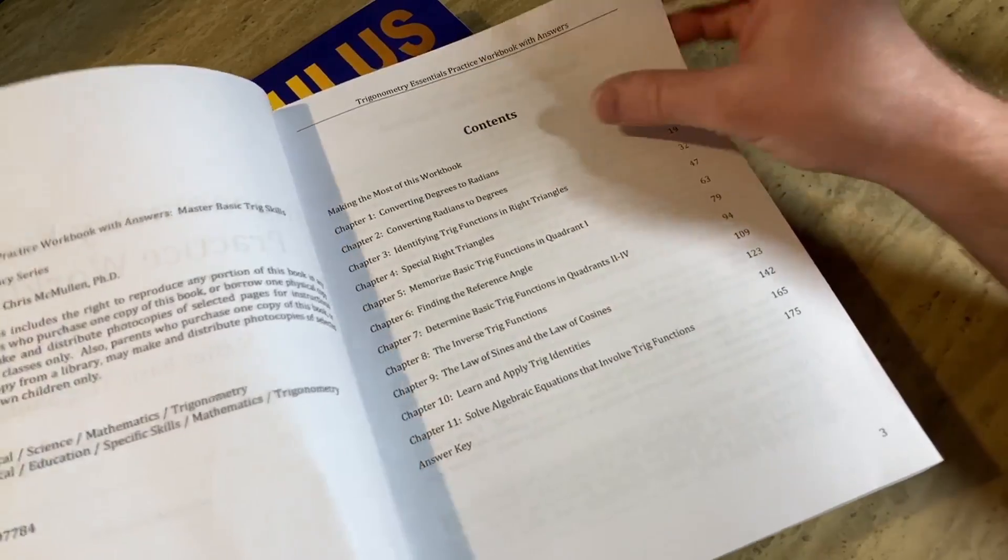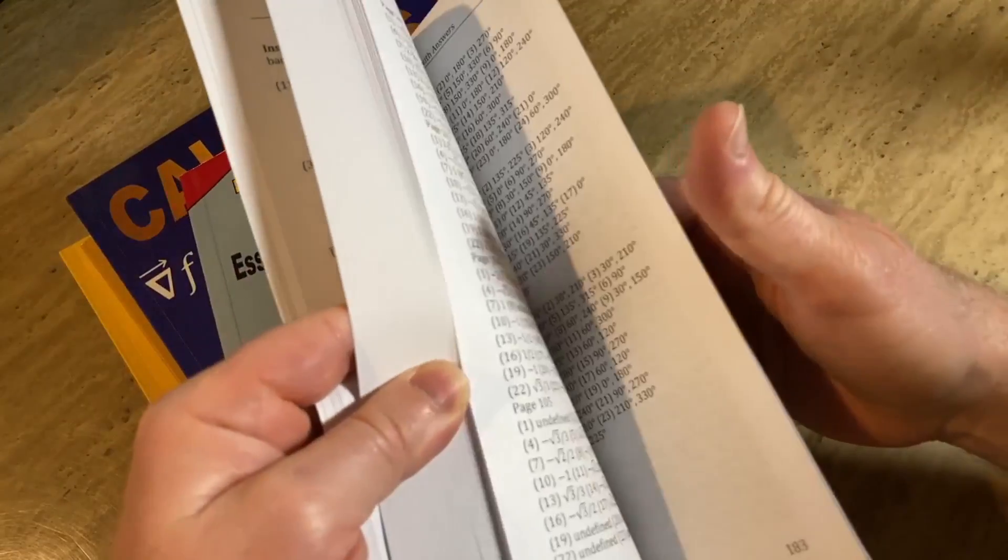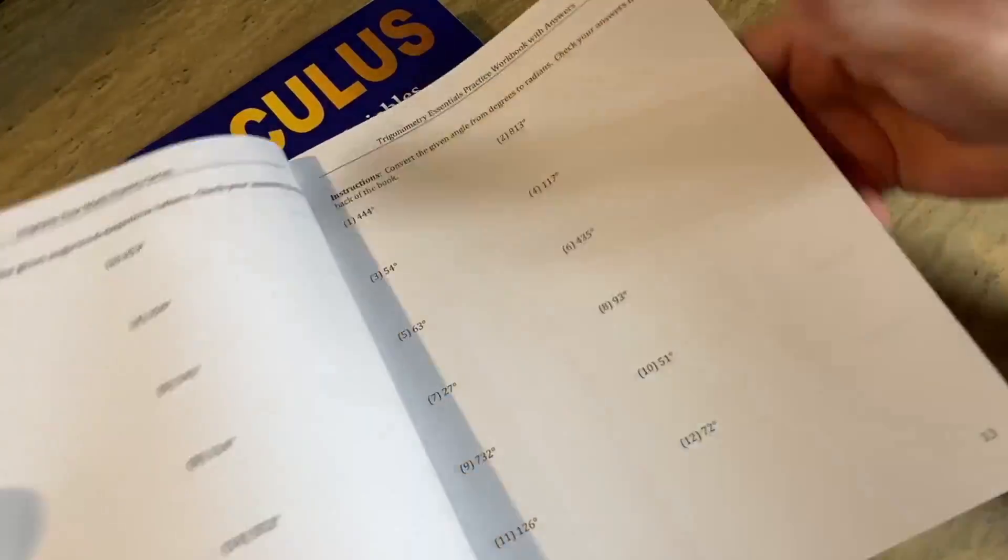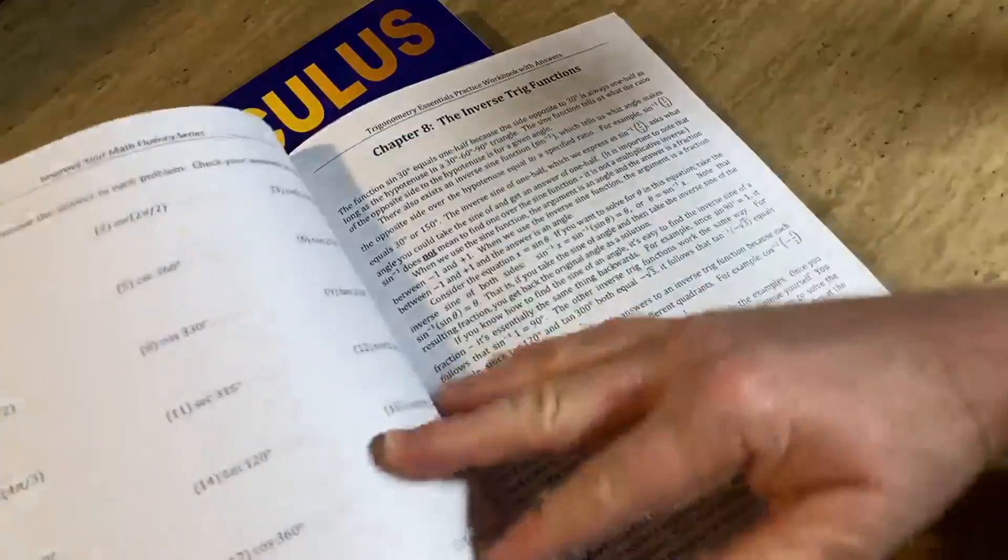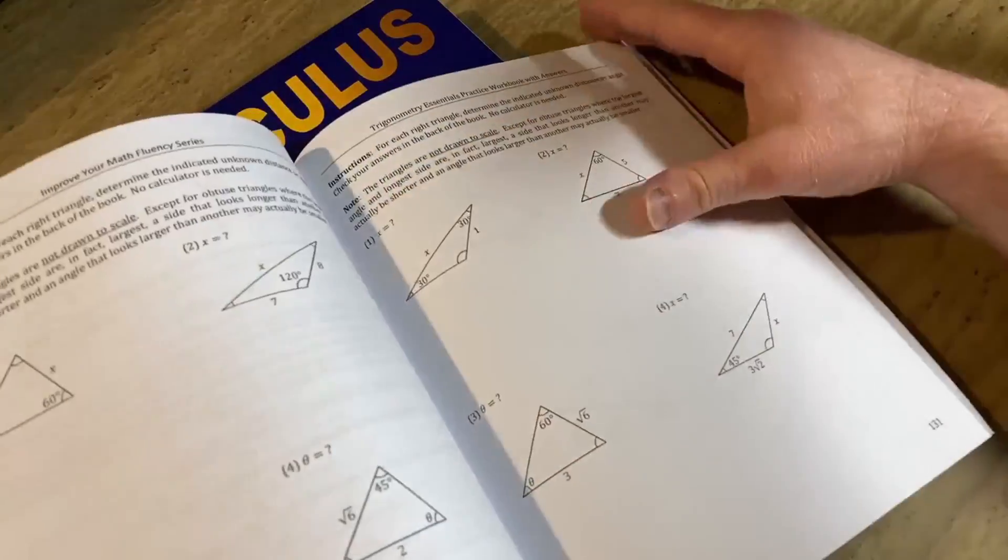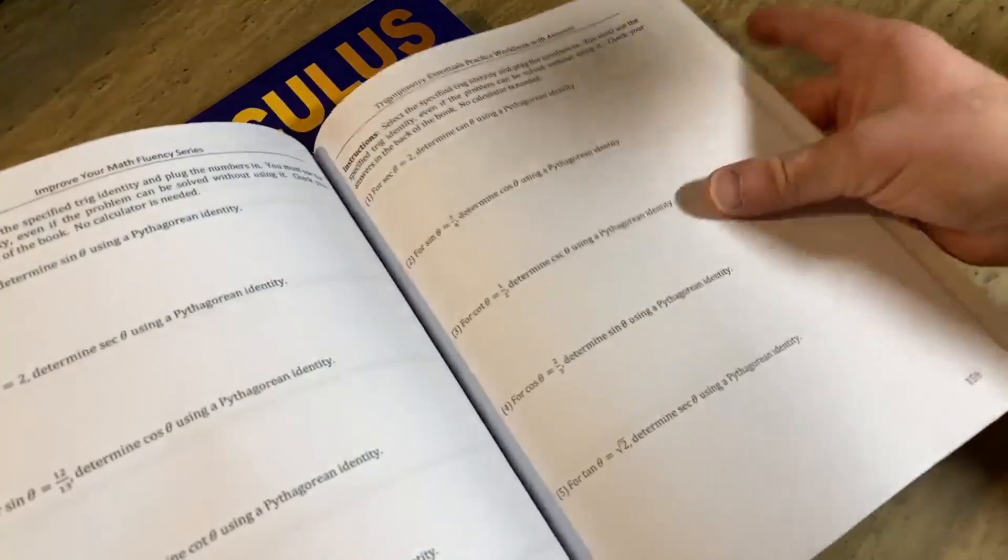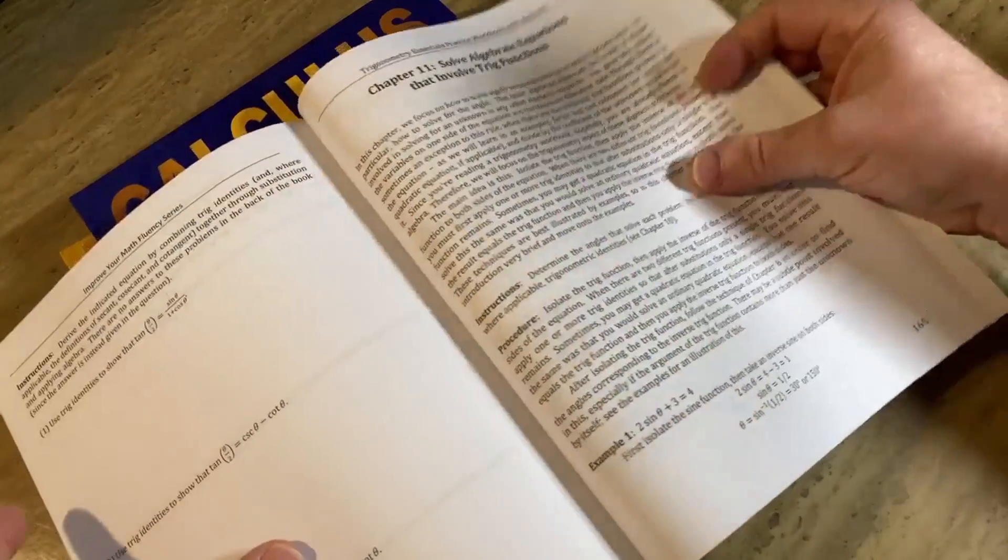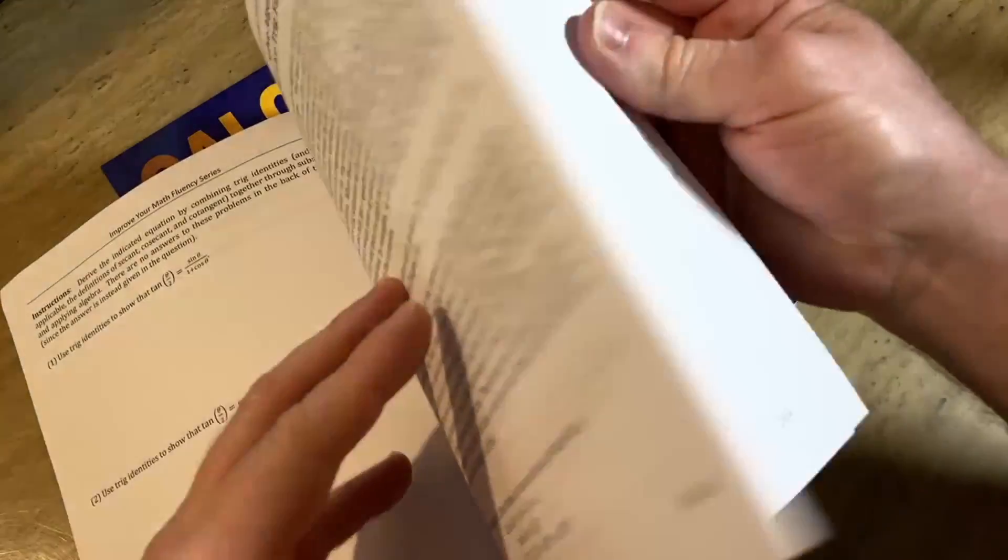So if you take a trig class, it's likely these are the things that are going to trip you up, in particular the trig identities and the equations - that's pretty tough for students. And this book provides tons of examples. Also it has solutions - let me just show you, it has answers to every single problem. Let me just show you the format of the book.